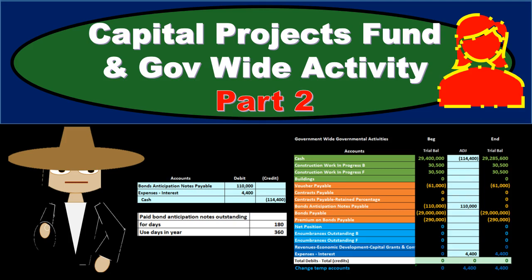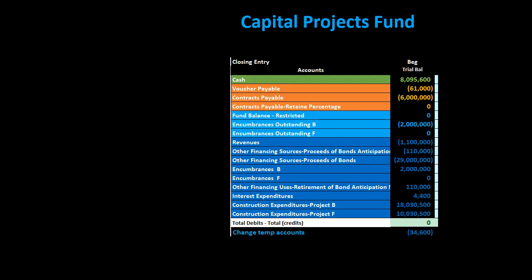In this presentation we will continue on our problem part two related to the capital projects fund and government-wide activity. In part one we entered the transactions into both the government-wide activity and capital projects fund. Now we're going to go through the closing process related to the capital projects fund as well as the financial statements related to the capital projects fund.